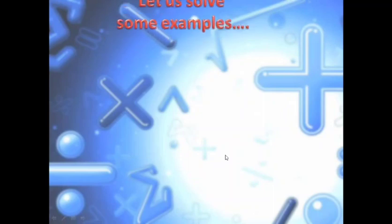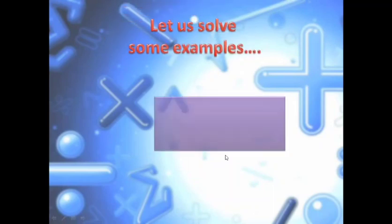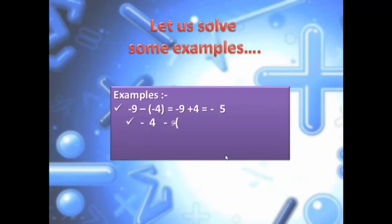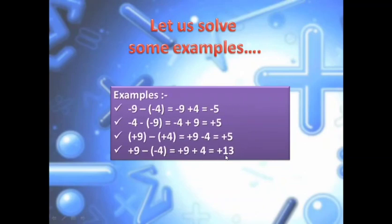Let us see more examples to understand subtraction of integers better. Minus 9 subtracted from minus 4: what you have to change is the sign of the number next to the subtraction sign, that is minus 4. Opposite of minus 4 is plus 4. Minus 9 is written as it is. So minus 9 plus 4 — with opposite signs I subtract. 9 minus 4 is 5, and the bigger number is 9 with a minus sign, so the answer is minus 5.